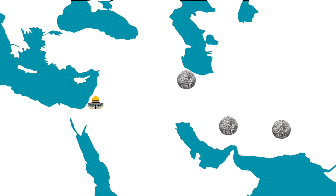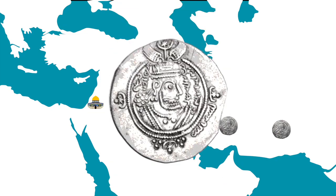There are, for example, coins with the name Abdallah ibn al-Zubayr, which clearly point to a person. But in cases where we only have the words Abdallah or Muhammad, we must conclude that we are not looking at a person but a title — the servant of God or the blessed one, respectively.